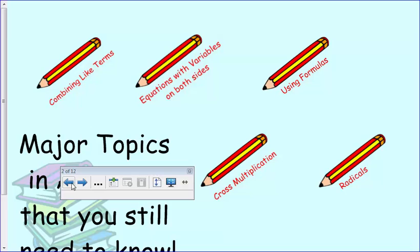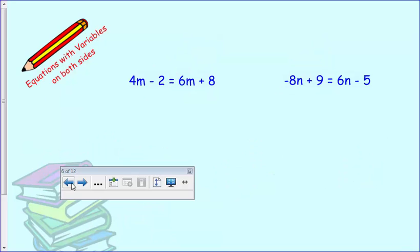Now, these are going to end up working their way down to one-step and two-step equations, so we'll review that process at the same time. The first thing I like to do is look at the variables, the terms with variables, and figure out which number is bigger. Since this 6m is bigger, I'm going to move the 4m over to the other side. Now, remember, we're going to do the opposite operation. Since this is a positive 4, we're going to subtract 4m from both sides of the equation. Well, 4m minus 4m, that cancels out, leaving me with minus 2 equals.